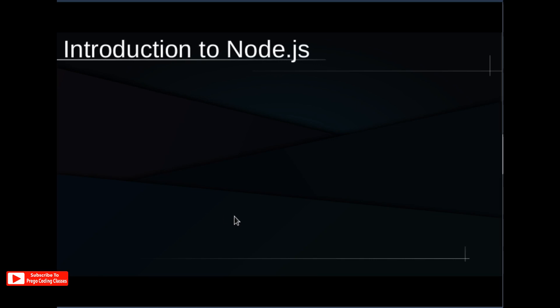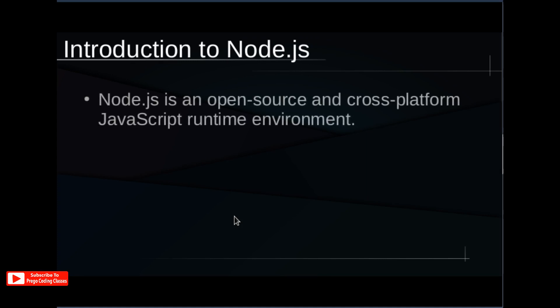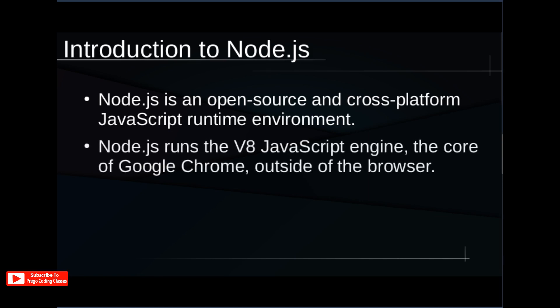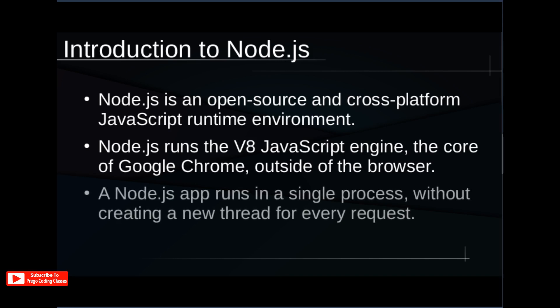Let's start the first lesson of our Node.js series. This is an introduction to Node.js. The first point is that Node.js is an open source and cross-platform JavaScript runtime environment. The second point is that Node.js runs the V8 JavaScript engine — the core of Google Chrome — outside the browser. The third point is that a Node.js app runs in a single process without creating a new thread for every request.